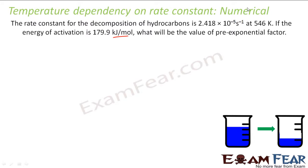The equation we know is K equals A·e^(−Ea/RT). T is given, R is something we know, Ea is given, and A is something which we have to find. K is also given, so let's put in the values.